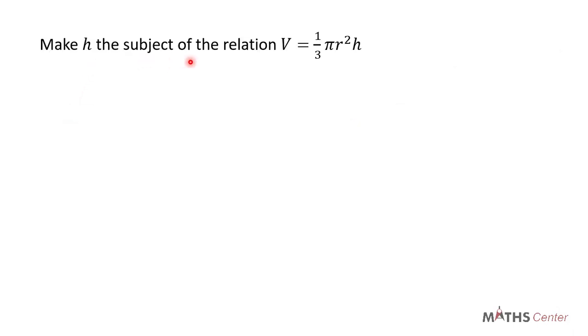Make h the subject of the relation V = (1/3)πr²h. So we have V = (1/3)πr²h and we are going to make h the subject.